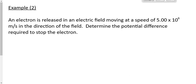I want to do one more example with you — example number two. It says an electron is released in the electric field moving at a speed of 5 times 10 to the 6 meters per second in the direction of the field. Determine the potential difference required to stop the electron.